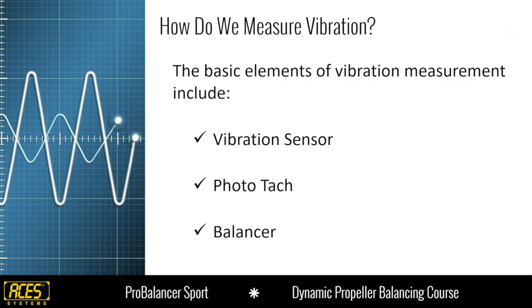How do we measure vibration? The basic elements of vibration measurement include a vibration sensor, a photo tach, and a balancer. The vibration sensor is a device used to pick up the vibration. The photo tach is your speed sensing device, and the balancer is the computerized device that, with the algorithms inside, gives you the solution.